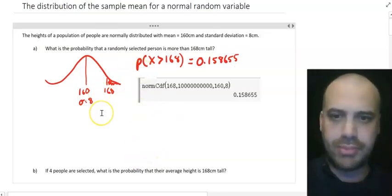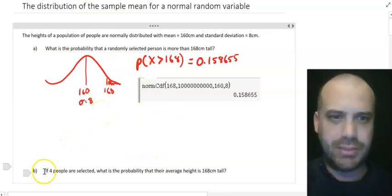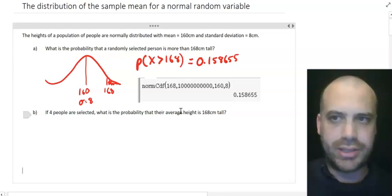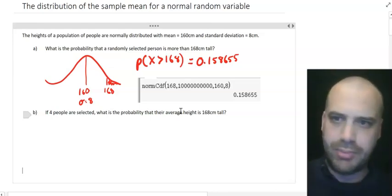All right, so like I said, all of that's math method stuff. This next bit, this is the math specialist stuff. We're going to select four people, and then we're going to average their heights. That's the definition of a sample mean right there.